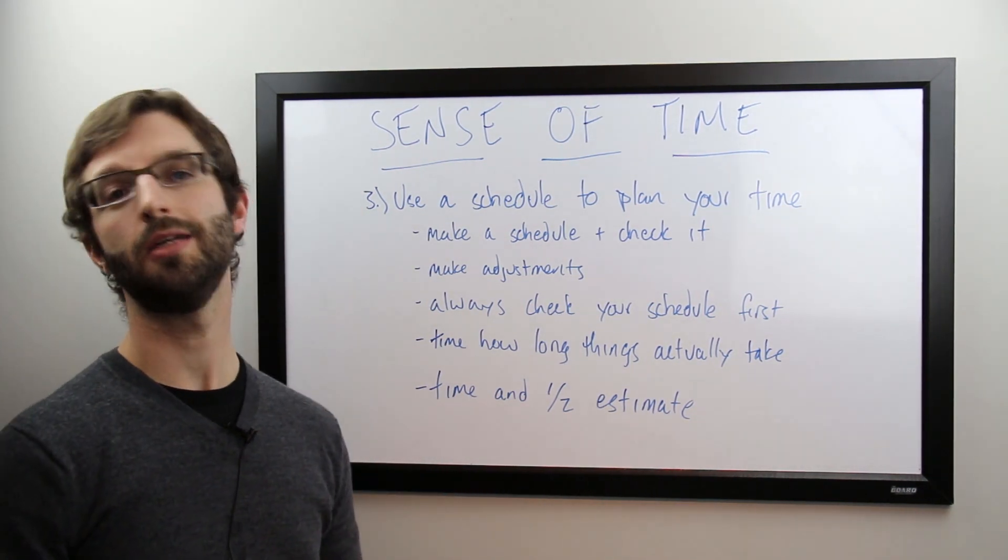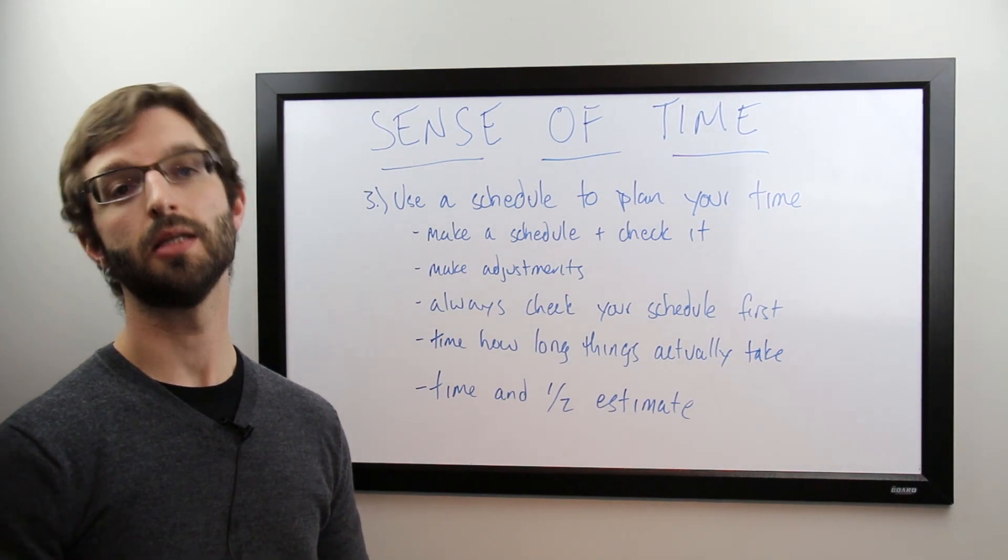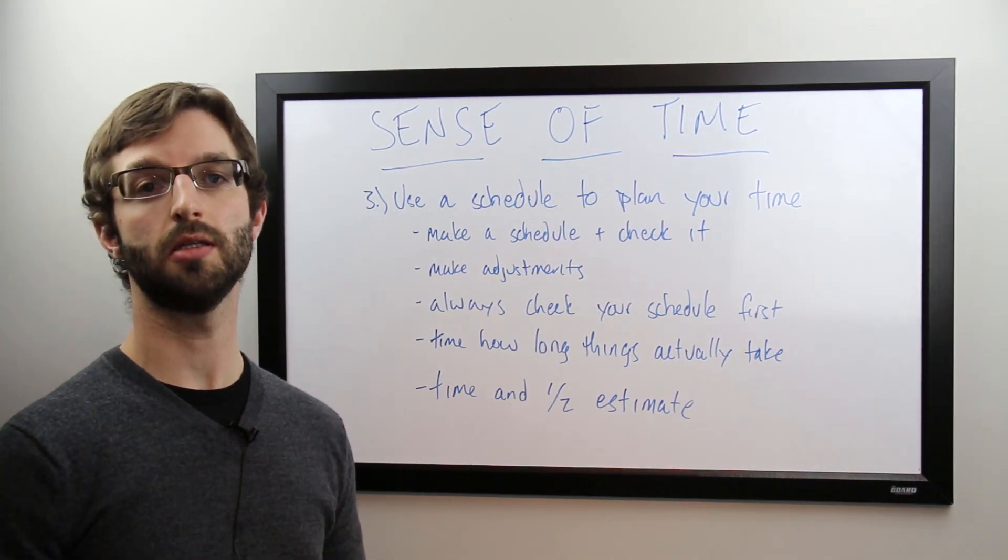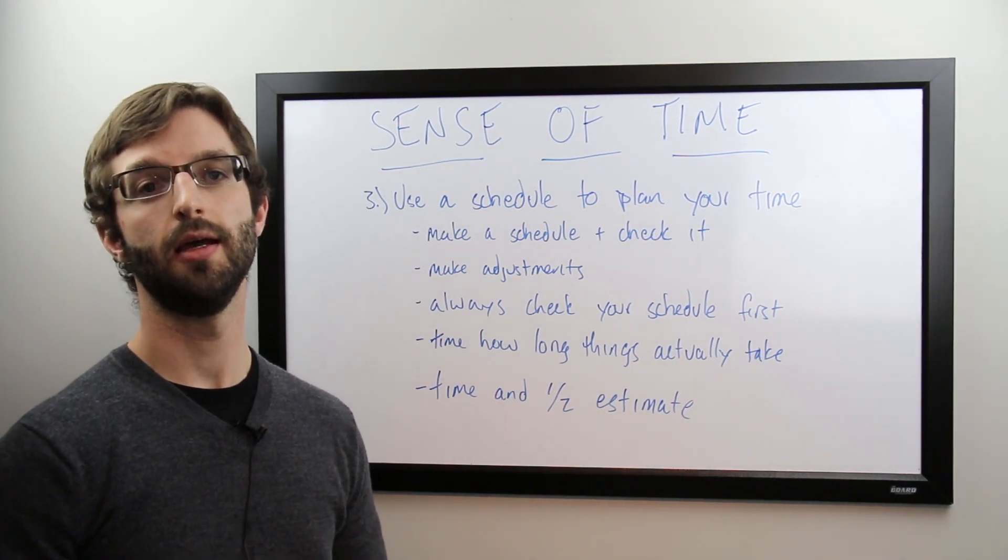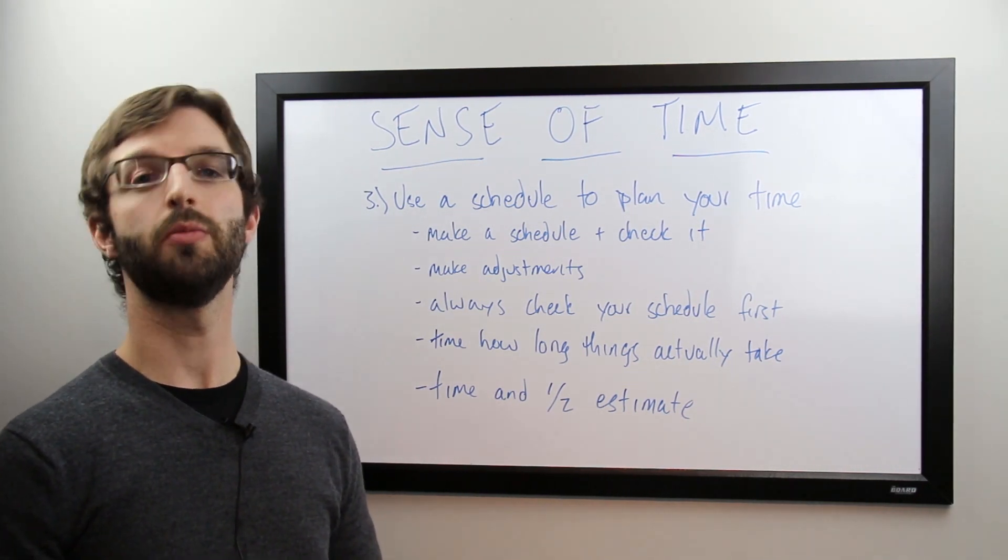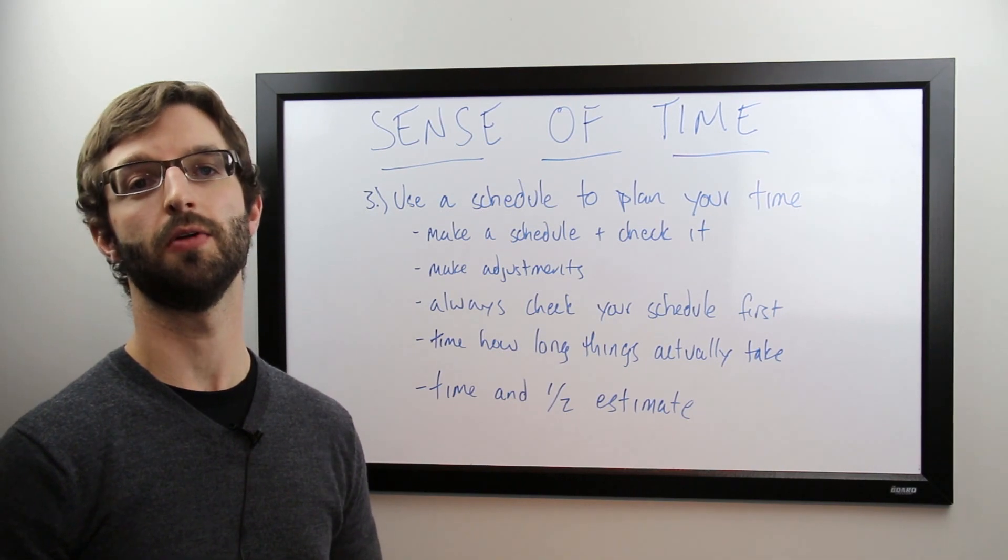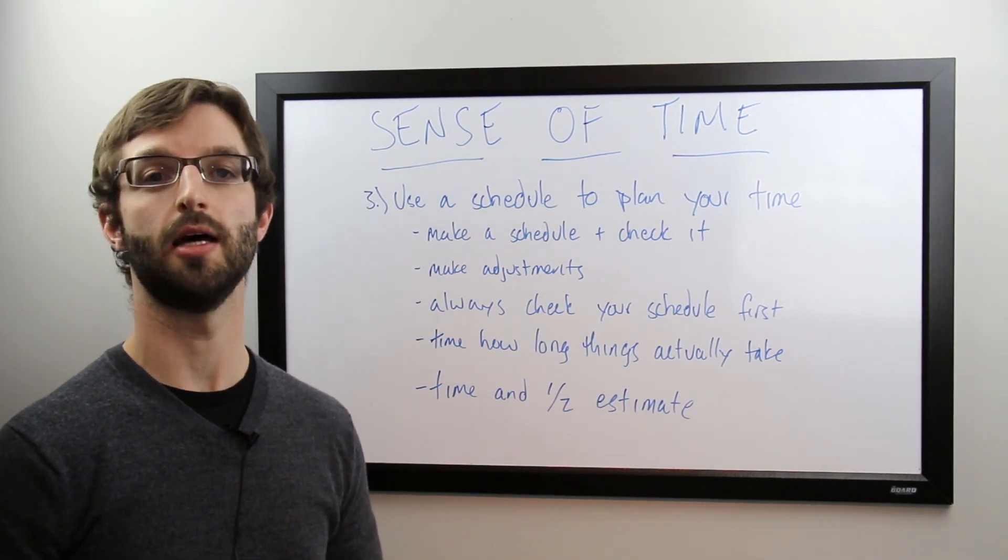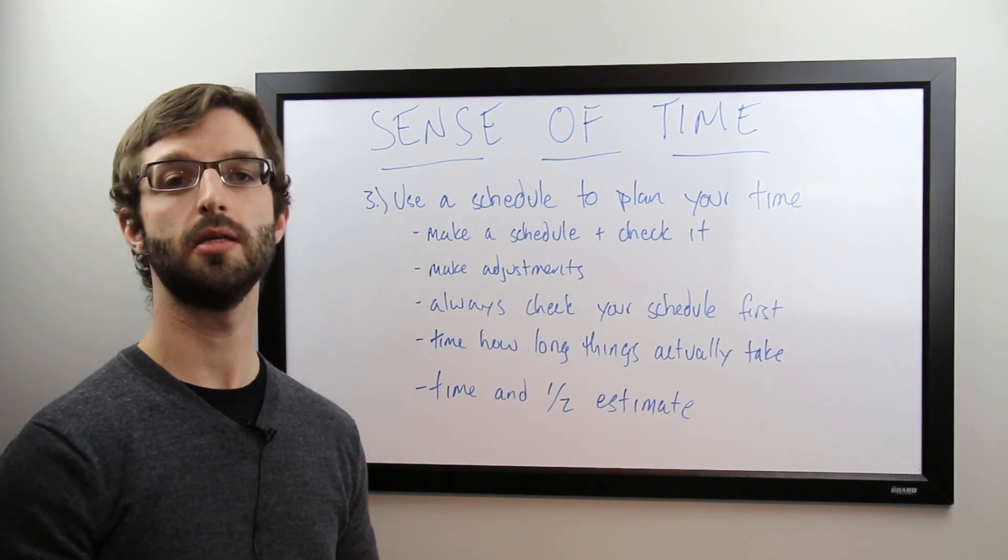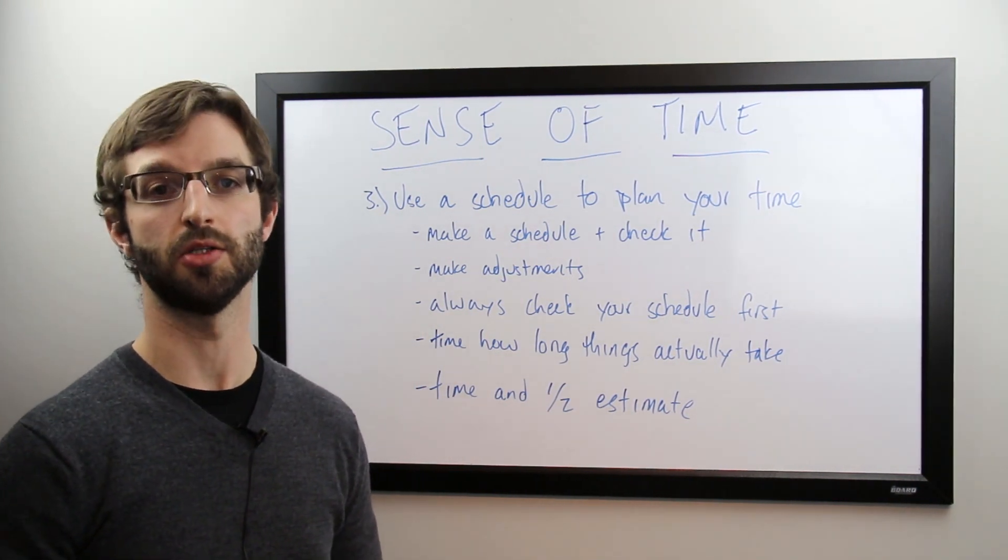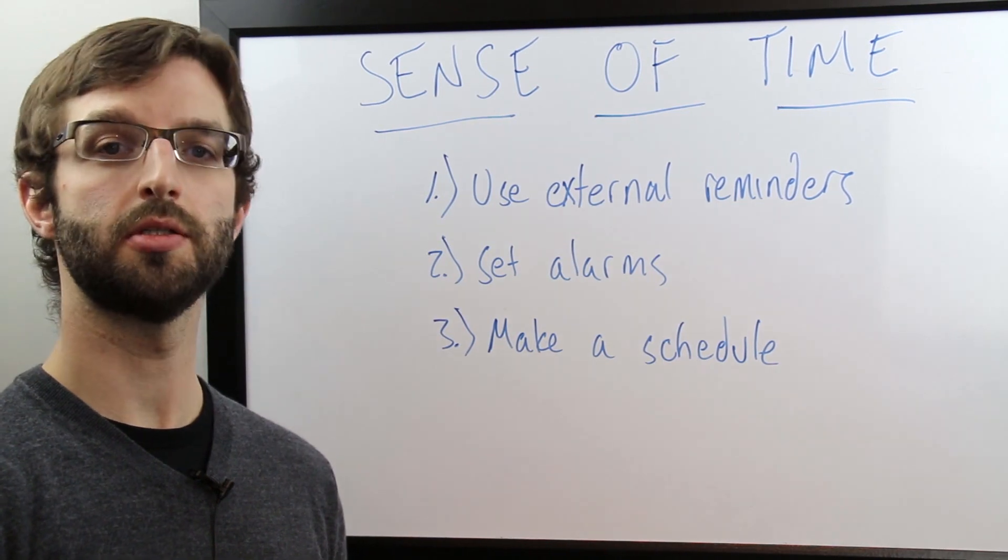Finally, use time and a half, even double time estimates. Especially if you have weak executive functioning skills, you're probably going to tend to underestimate how long things are actually going to take. And nothing ever goes as planned. So you want to make sure you budget time for mistakes, for life, and for transition times. So using time and a half to double time how long you think things will actually take is a safe way to build in this cushion. So those are the basics of managing your sense of time.